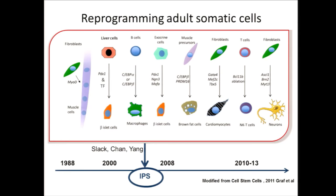There was a real boost from the seminal findings by Yamanaka and colleagues showing that ectopic expression of stemness markers can push the developmental fate of adult tissues back towards pluripotency. As my colleague indicated, for generating alternate adult tissues, one can go directly from fibroblasts to neurons without going via induced pluripotency.